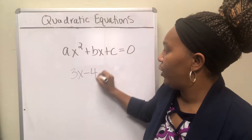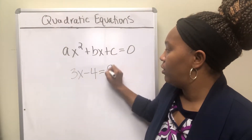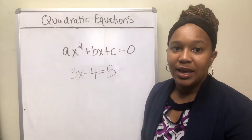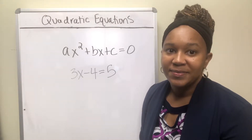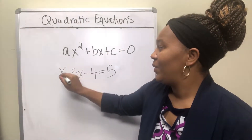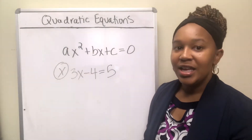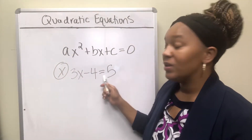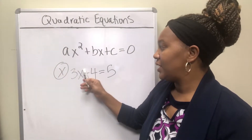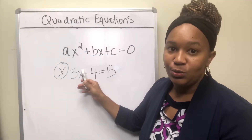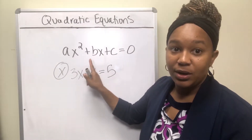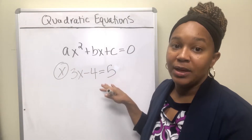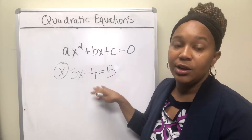First example: 3x minus 4 equal 5. Is that a quadratic equation? If you said no, you are correct. There is an equal sign, there is one variable, but the highest exponent on that variable is not two. There is no exponent, or there is an understood exponent of one, and so therefore that makes this a linear equation.